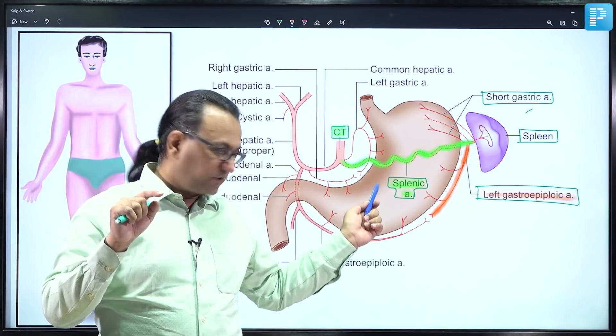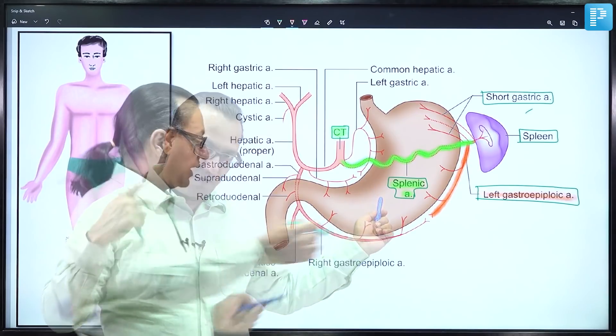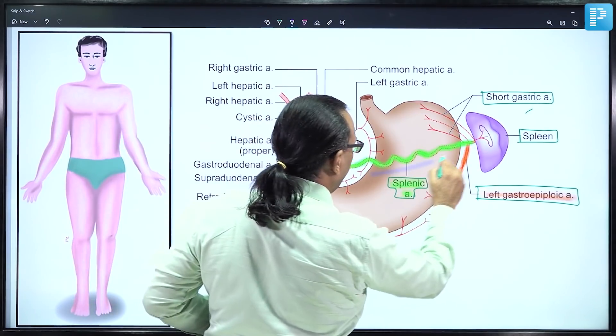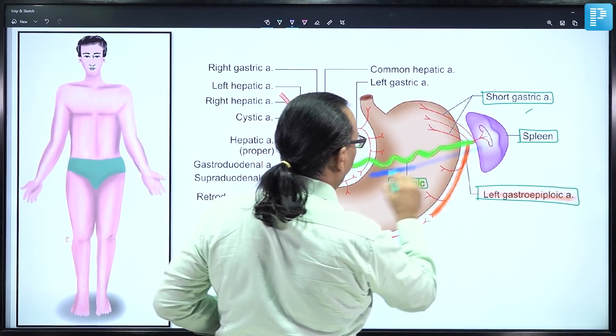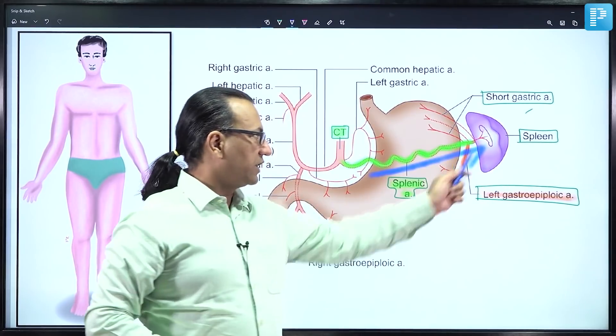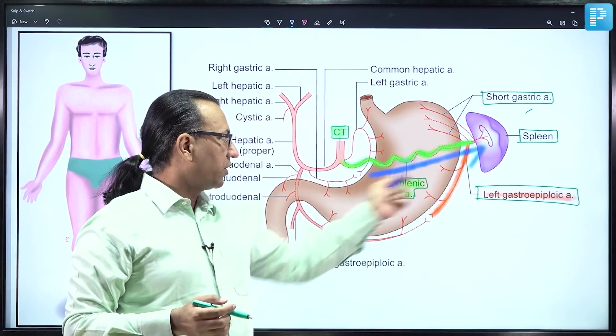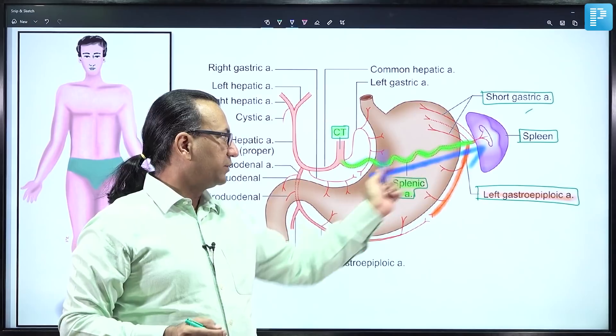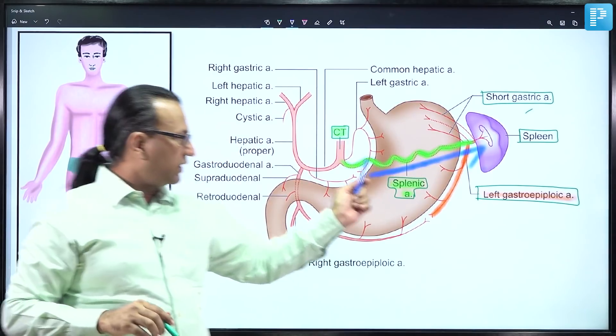The splenic artery runs on the superior border of the pancreas, which also lies behind the stomach. The superior border of the pancreas continues as the tail, reaching the hilum of the spleen. Along this superior border, the splenic artery runs and gives off branches.